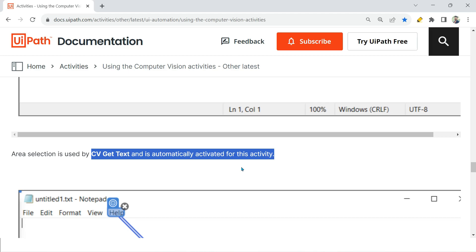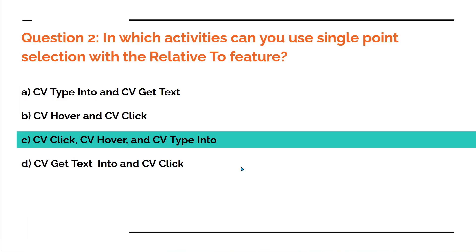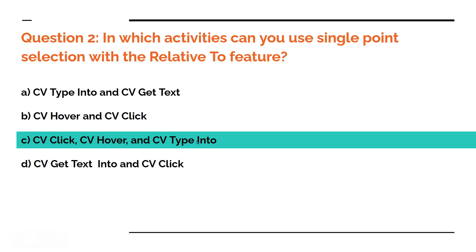So let's go back to the question. If you look at the question, it is just asking about single point selection. Single point selection: cv click, cv hover, cv type into. CV get text means area selection. Thank you guys for watching. I hope you got all the questions right. Please do comment — I would love to read them. Let's meet once again in our next content.